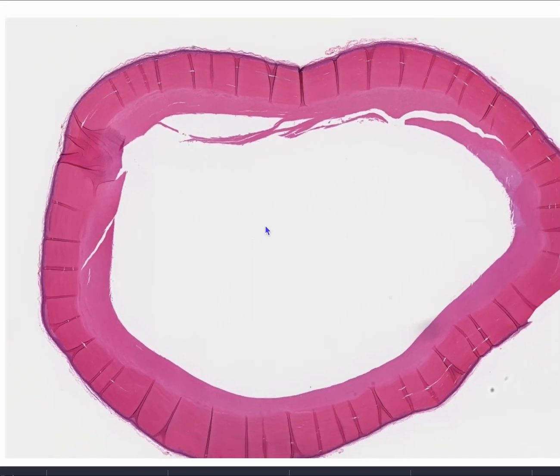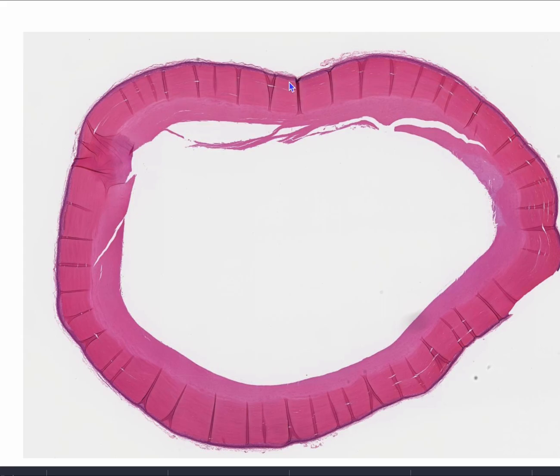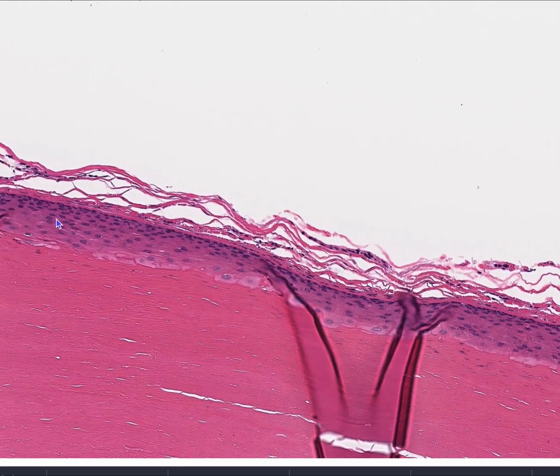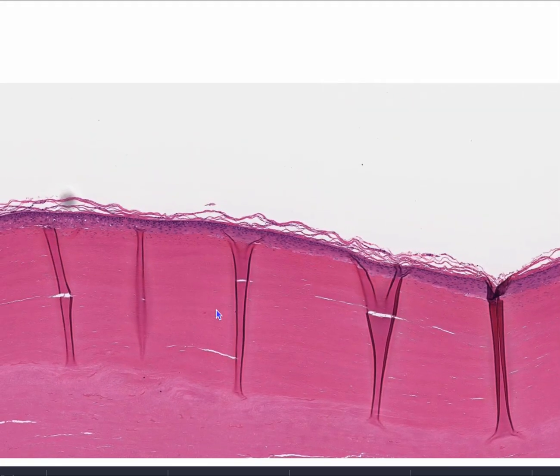So if you see a well-circumscribed cyst of the scalp, it has very compact keratin, it has an epithelium without a granular layer, you want to think about a pilar cyst. All right, well, thanks for watching.